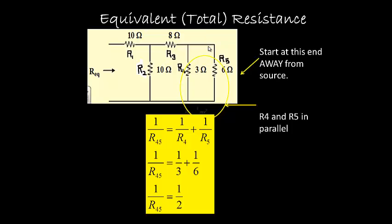Remember, once you get the answer, if it's 1 over R45, you are going to have to reciprocate it to get R45 of 2 ohms.